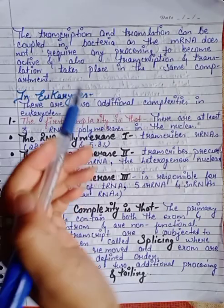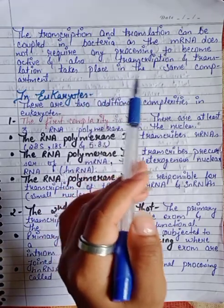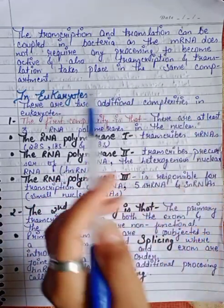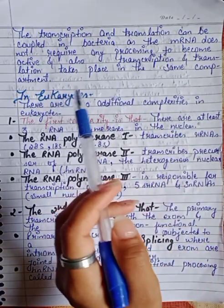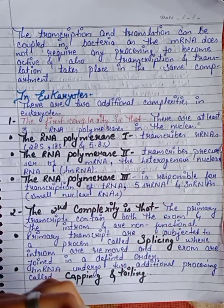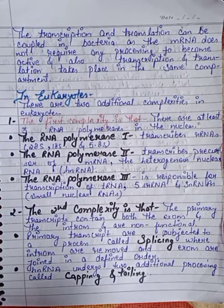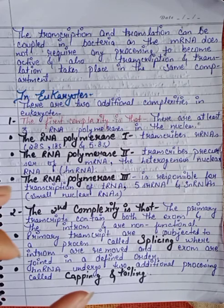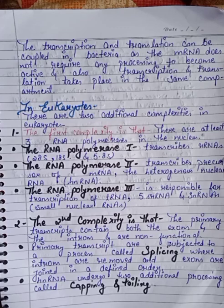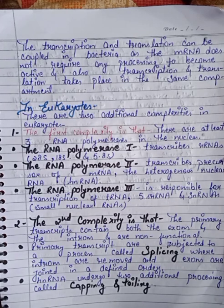Transcription and translation can be coupled in bacteria, as the mRNA does not require any processing to become active and both transcription and translation take place in the same compartment. In prokaryotes, we can do transcription and translation together in one compartment, whereas in eukaryotes, the transcription process occurs in the nucleus.